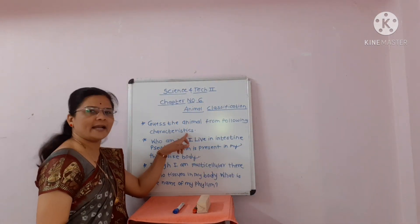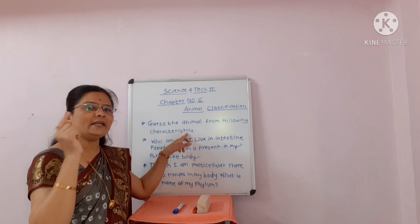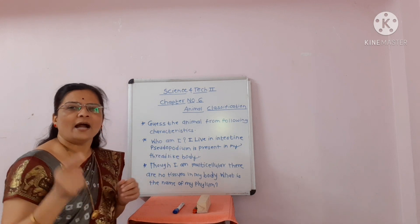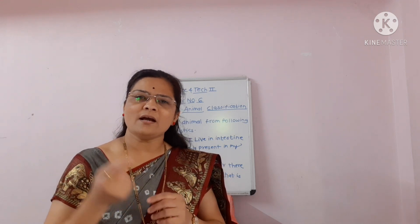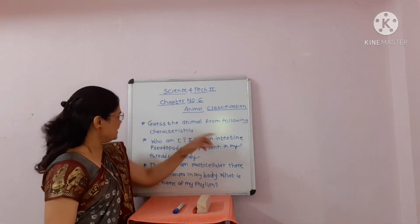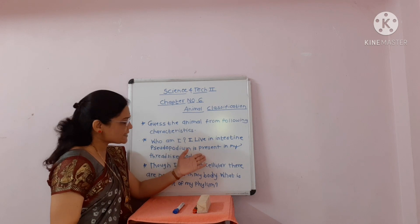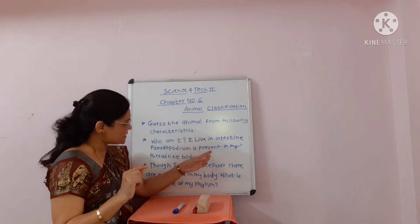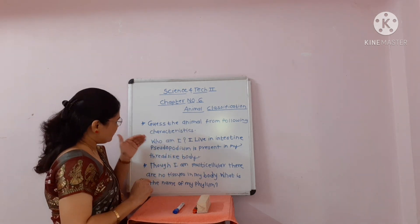Guess the animal from the following characteristics. Sometimes characteristics of animals are given, and from those you have to identify the phylum. Who am I? I live in the intestine. Pseudopodium is present in my thread-like body. Who am I? Ascaris. Obviously, phylum Aschelminthes — the example is Ascaris, and Ascaris is called the intestinal worm. These are the sequence of the answers.